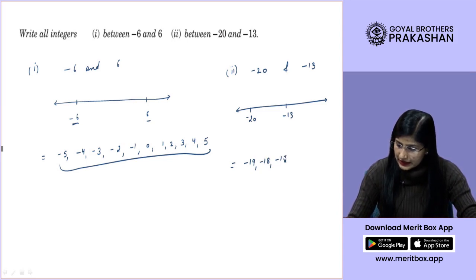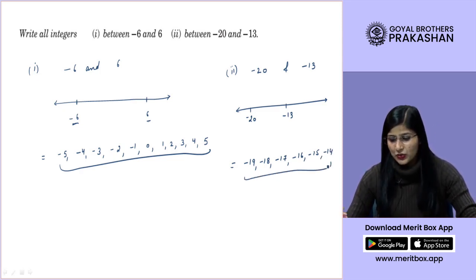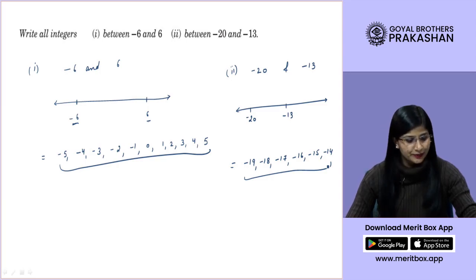...minus 17, minus 16, minus 15 and minus 14. These will be the numbers that will lie between minus 20 and minus 13.